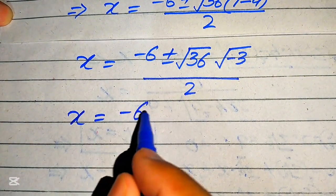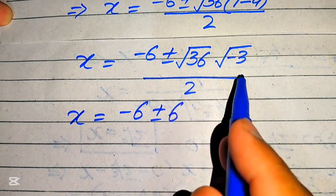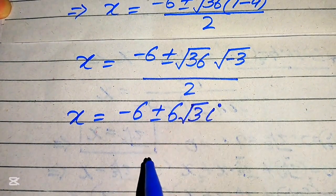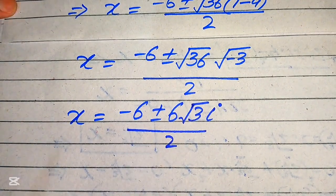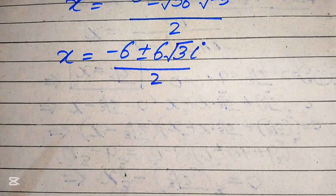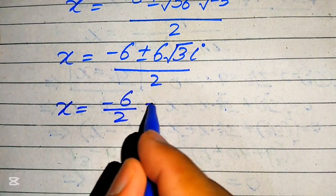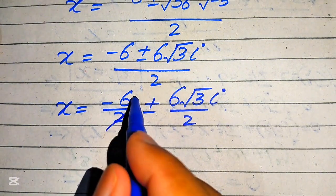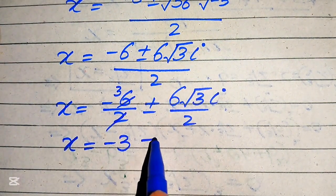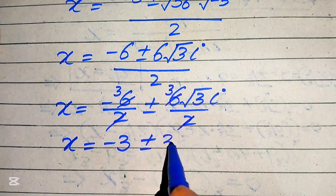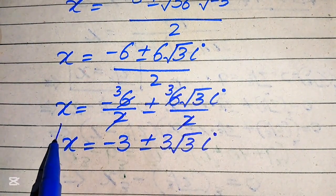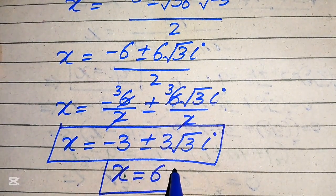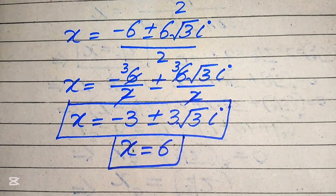We know square root of 36 equals 6, and the negative sign inside the square root introduces iota, giving 6 times square root of 3 times iota, divided by 2. Splitting the fraction: minus 6 over 2 plus or minus 6·√3·i over 2, which simplifies to x equals minus 3 plus or minus 3√3·i. These are the two complex roots of the given equation, and x equals 6 is the one real root.